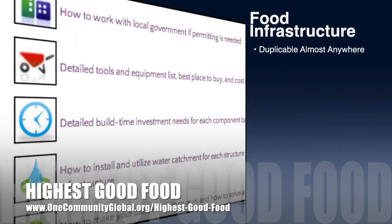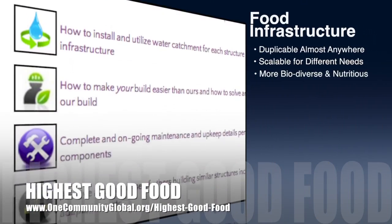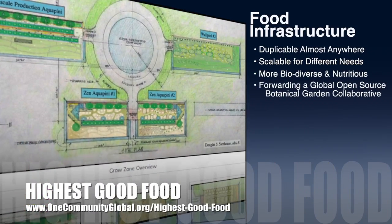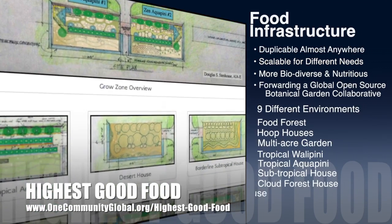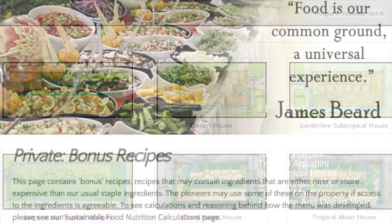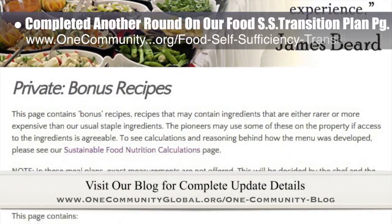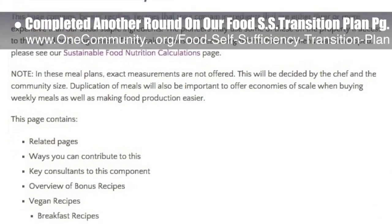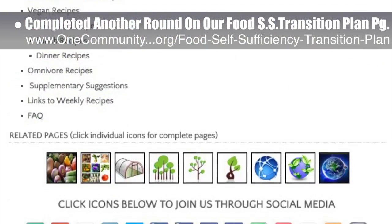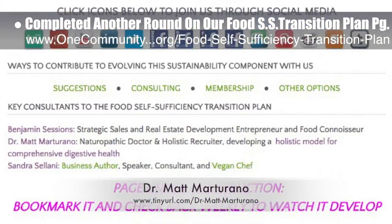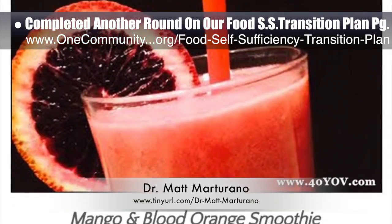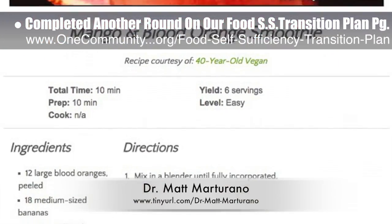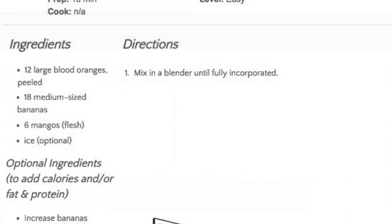OneCommunity's approach to Highest Good Food is duplicable almost anywhere, scalable for different needs, more biodiverse and nutritious, part of forwarding a global open source botanical garden collaborative, and includes nine different free shared and duplicable growing environments. This week, the core team working on Highest Good Food completed another round organizing the streamlined version of our food self-sufficiency transition plan page. This page includes contributions provided by naturopathic Dr. Matt Maturano, creator of the coherent model for comprehensive digestive health. We further organized the recipes, creating a page for bonus recipes. The organization is now approximately 85% complete.